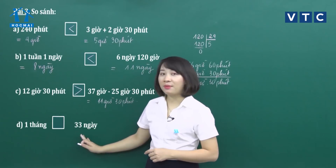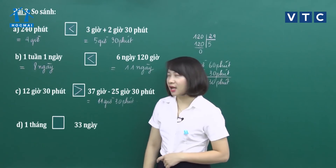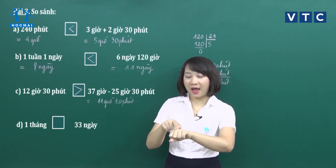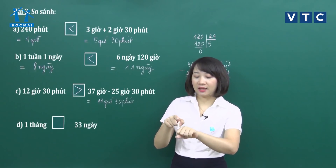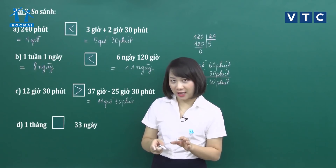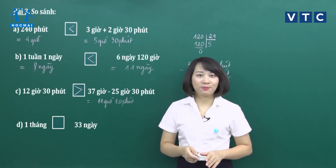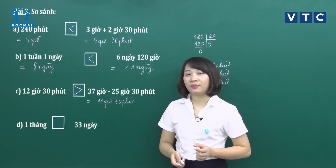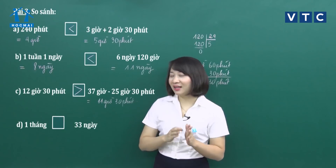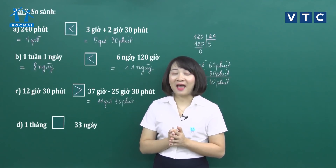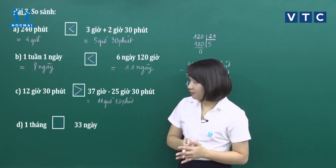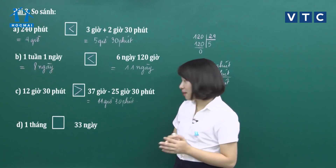Câu D: 1 tháng và 33 ngày. Các bạn nhận thấy 1 tháng tối đa có 31 ngày — bao gồm các tháng 1, 3, 5, 7, 8, 10, 12. Các tháng còn lại có 30 ngày. Tháng 2 có 28 ngày đối với năm thường và 29 ngày đối với năm nhuận. Vậy không có tháng nào vượt quá 31 ngày, nên 1 tháng nhỏ hơn 33 ngày.